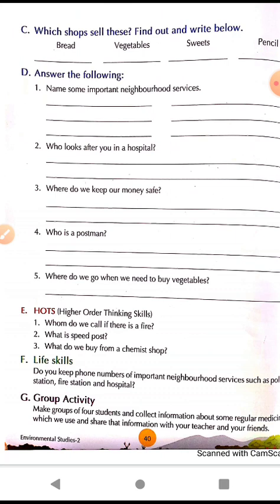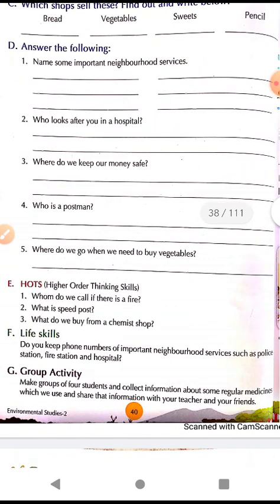Question two: who looks after you in a hospital? Answer: doctors and nurses look after us in a hospital. Question three: where do we keep our money safe? Answer: we keep our money safe in a bank. Question four: who is a postman? Answer: the person who brings letters to our doorstep is a postman. Question five: where do we go when we need to buy vegetables? Answer: we go to a greengrocer.